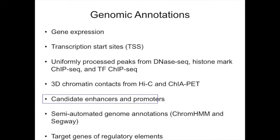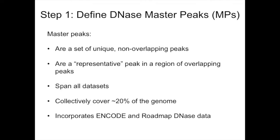What we're going to be talking about today is annotating candidate enhancers and promoters. This is our current pipeline for doing so, and this work is done by Michael Pucayo in our lab. Our first step was to define what we call DNase master peaks. These peaks are a set of unique, non-overlapping peaks representative of the DNase peaks you see in a region. They span all data sets and collectively cover about 20% of the genome.